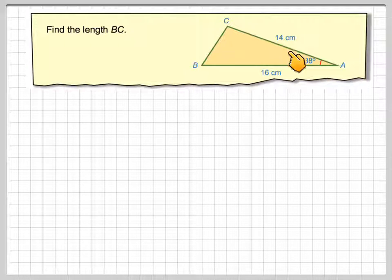And this is a situation where we have two sides and the included angle. The included angle means the angle between the two known sides, and therefore it's not possible to actually use the sine rule in this situation.